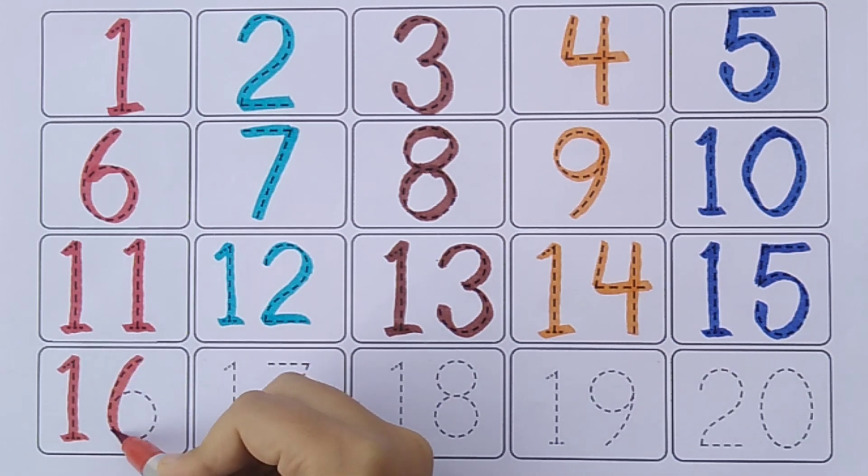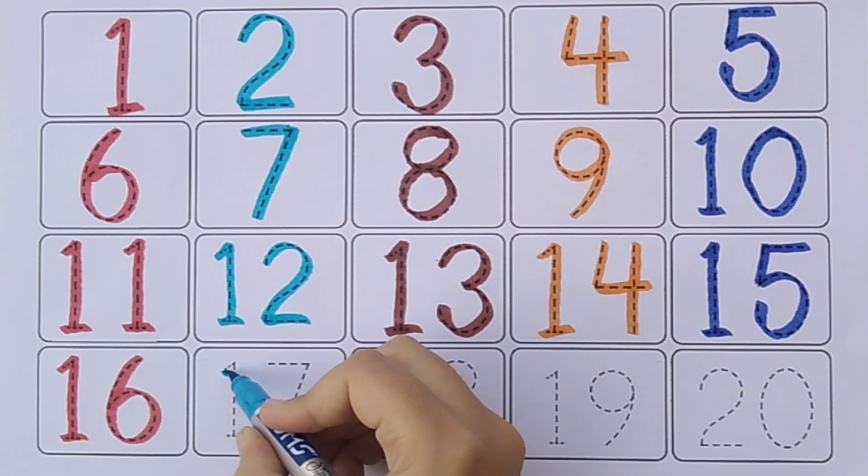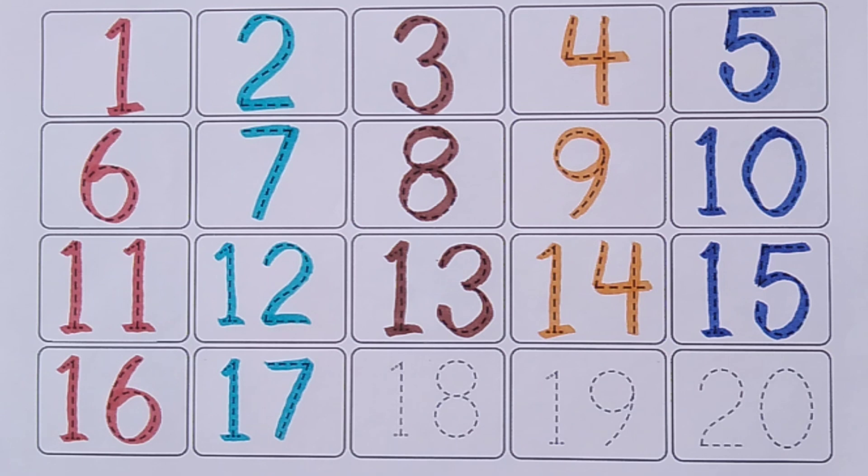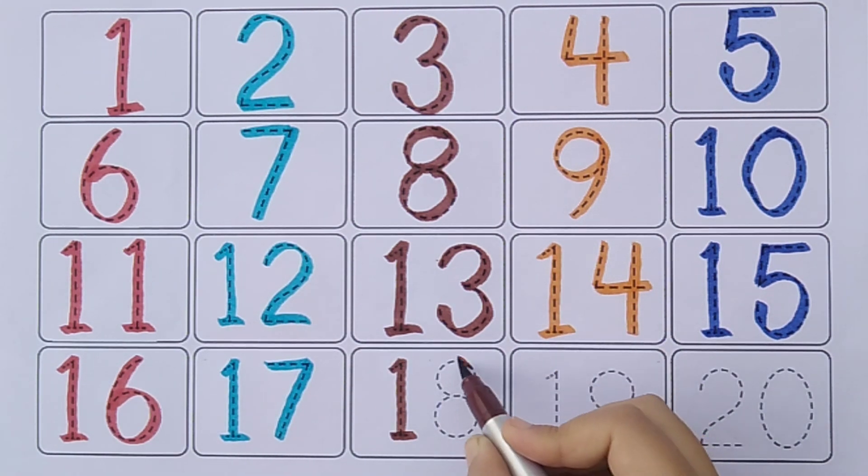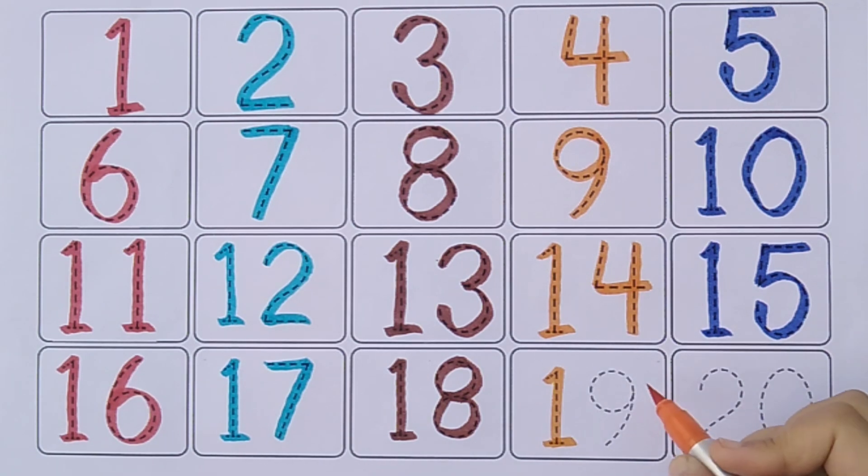One, six, sixteen. One, seven, seventeen. One, eight, eighteen. One, nine, nineteen. Two, zero, twenty.